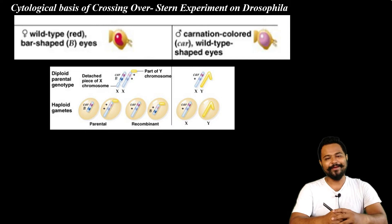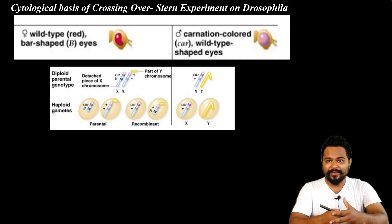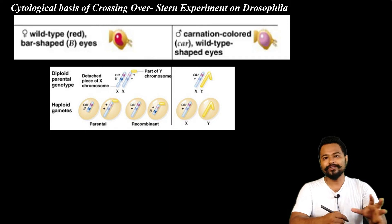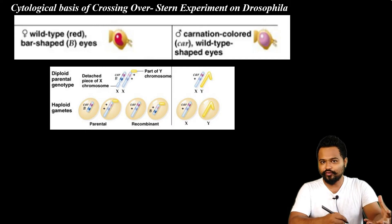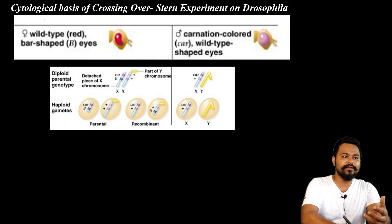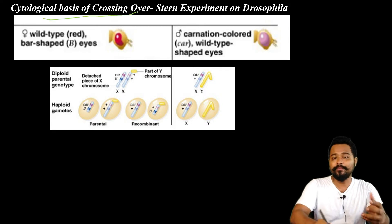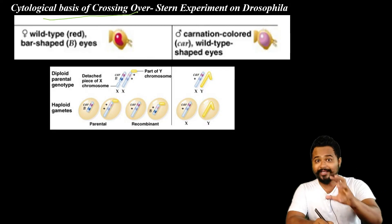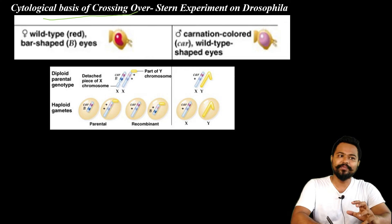Hello students, welcome back to my class. I am Dr. Ajibar, and today I am covering our second class to start. I am going to talk about the cytological basis of crossing over, the Stern experiment, and the Creighton & McClintock experiment.